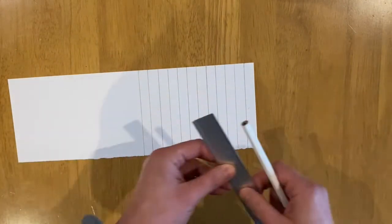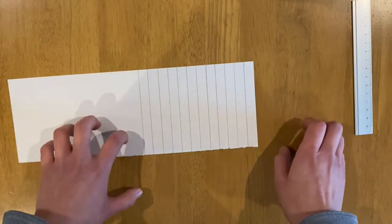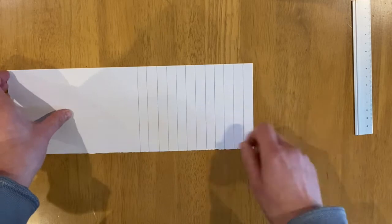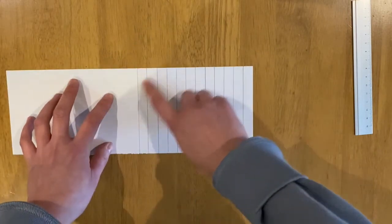Then what I did is I coloured in this whole section before I cut the strips out because it's a bit tricky to colour in really skinny pieces of paper. So you can colour in all of this.